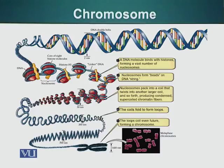These histones are positively charged. As you know, DNA is negatively charged because of the phosphate group. And under physiological conditions, these histone proteins have a positive charge which allows DNA to wrap around these molecules very tightly.